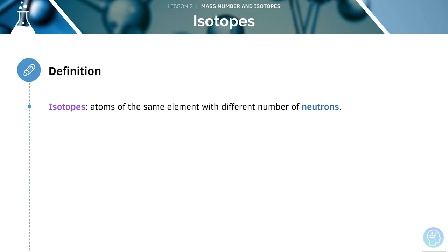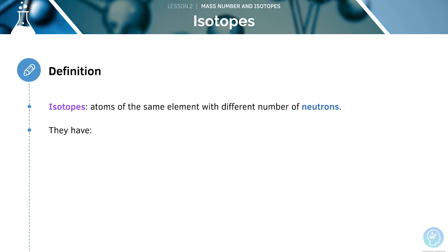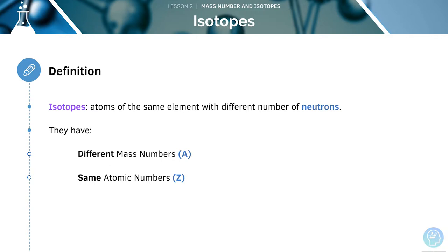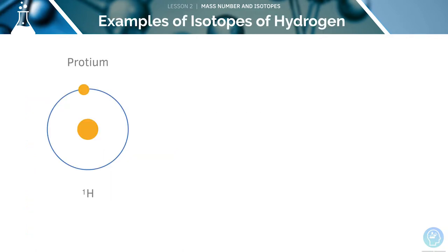We'll now move on to looking at isotopes. The definition of an isotope is that atoms of the same element have different numbers of neutrons. They will have the same number of protons and electrons. Isotopes have different mass numbers, since the mass number depends on the number of neutrons, but they still have the same atomic number, since the number of protons remains the same.